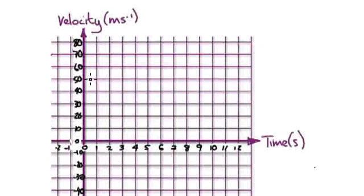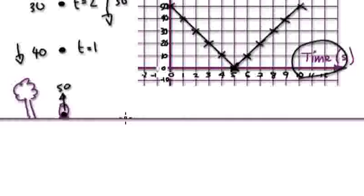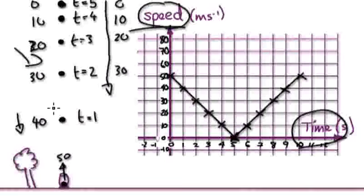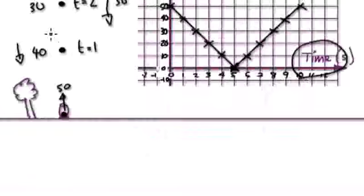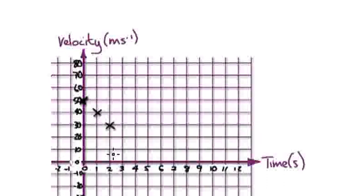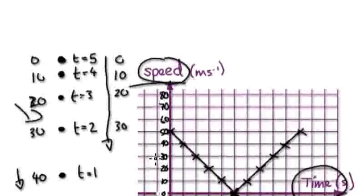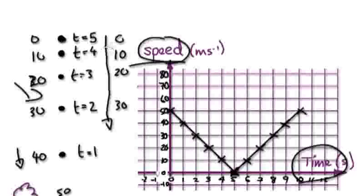When t equals 0, the velocity is 50. When t equals 1, velocity is 40. The velocity is decreasing by 10 each time. At t equals five, where the cannonball has reached its maximum height, the velocity is zero.